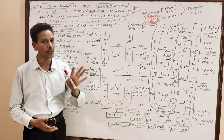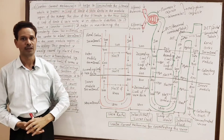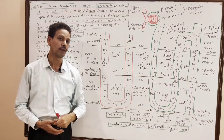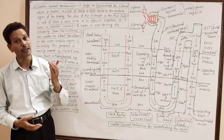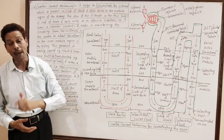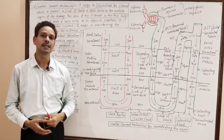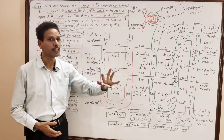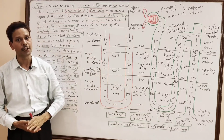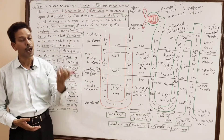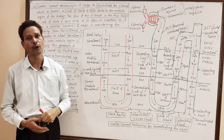In today's lecture we will discuss the counter current mechanism of urine formation. This is a characteristic feature of terrestrial forms, particularly in the case of birds and mammals including human beings. This counter current mechanism is involved in the formation of concentrated, hypertonic urine that helps in the conservation of body water.